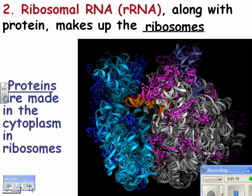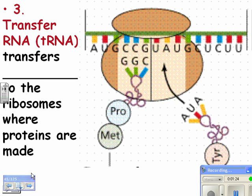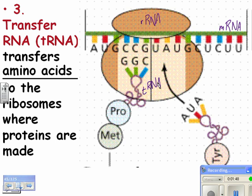The last type is transfer RNA, shortened as tRNA. This transfers amino acids to the ribosomes where proteins are made. So the messenger RNA carries the code from DNA on how to make proteins, the ribosome is made out of ribosomal RNA plus proteins, and this molecule here is called transfer RNA.